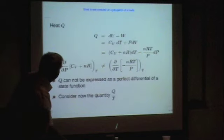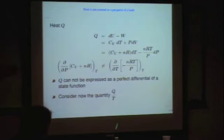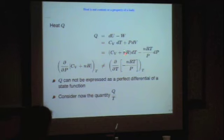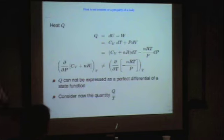Let us see whether heat is a path-dependent or path-independent quantity. Let me symbolize heat by Q. Q equals dU minus dV. W times dU is nothing but cV dT, the heat capacity at constant volume, plus P dV. Assuming PV equals nRT, I can write it as cV plus nRT times dT minus nRT over T times dT. When I differentiate with respect to pressure and with respect to temperature, I find that they are not equal. That means Q cannot be expressed as a perfect differential.